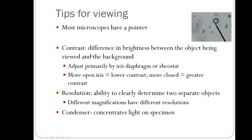Contrast refers to the difference in brightness between the object you're looking at and the background. Good contrast lets you clearly see what you're examining; poor contrast causes everything to blend together. You can adjust contrast using the iris diaphragm lever or the rheostat — generally, the more open the iris, the lower the contrast; closing it more increases contrast.